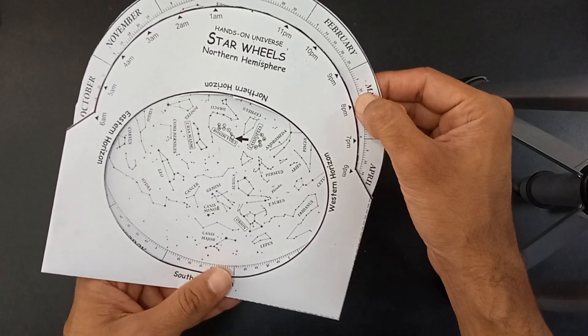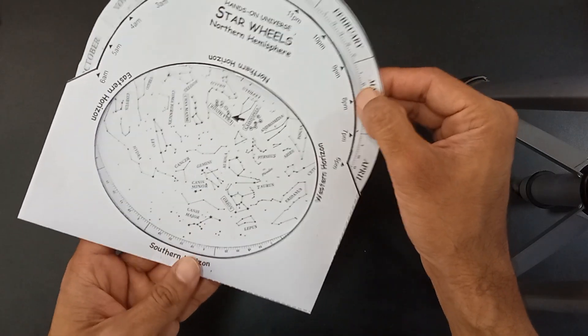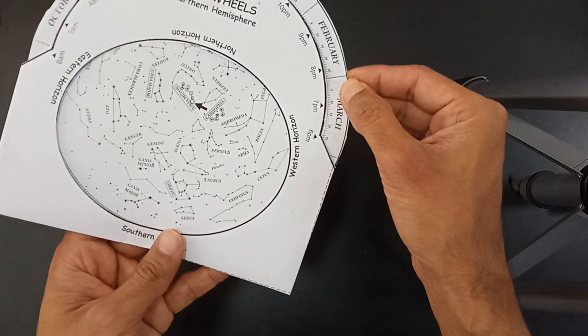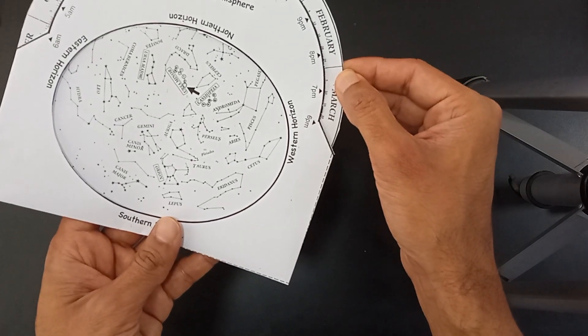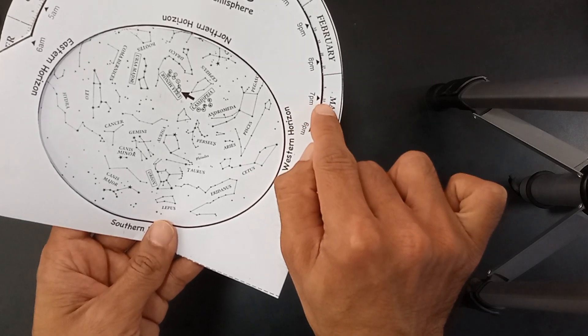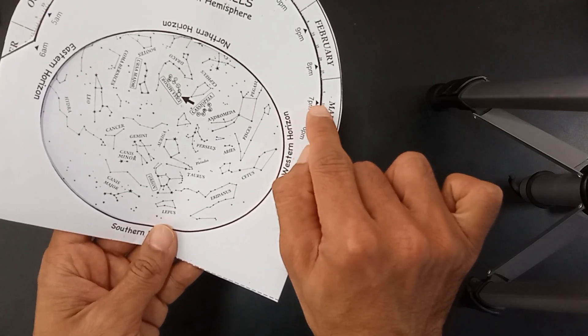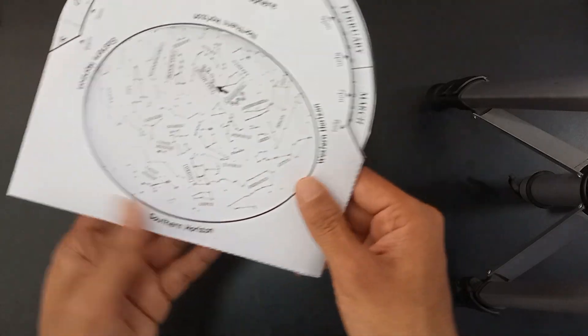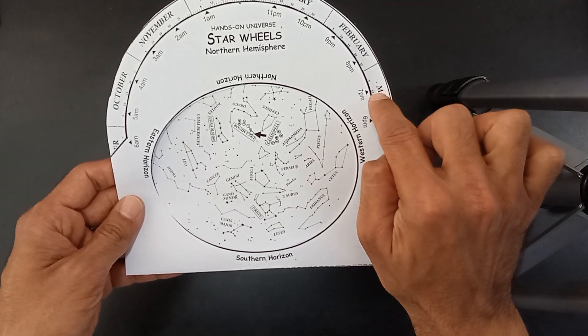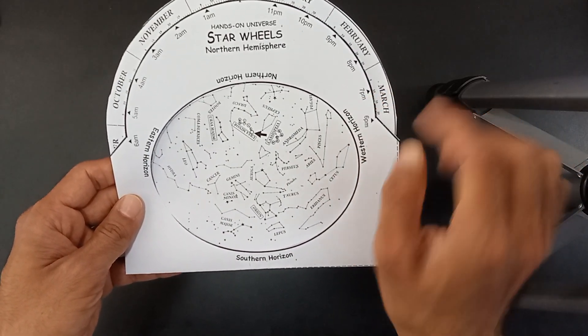And suppose I am on my rooftop at 7pm. So I have to rotate it in such a way that the 7pm aligns with the 10th March. Now if you will see, very simply, this is the March month, 10th March and 7pm. This is how your night sky will look like to you in March month, 10th date, 7pm.